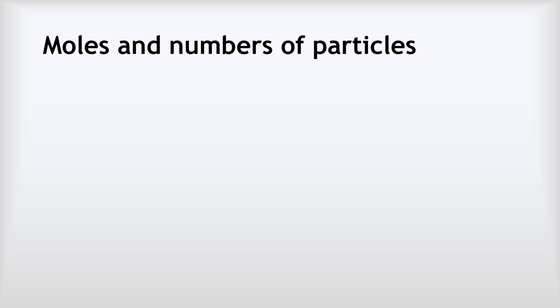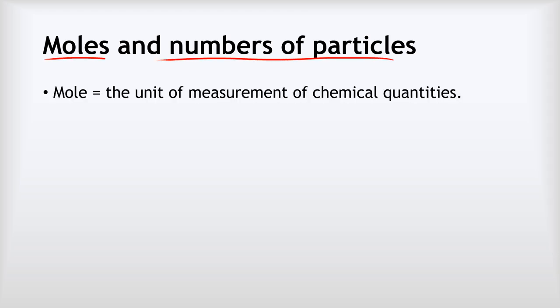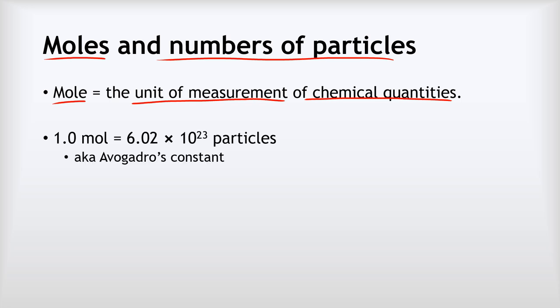So what's the relationship between quantities in moles and numbers of particles? Let's remind ourselves about moles first. The mole is the unit of measurement of chemical quantities — we don't measure chemical quantities in grams, kilograms, or decimeters cubed; we measure them in moles. One mole of something is 6.02 × 10²³ particles of that substance, and we call that number Avogadro's constant.